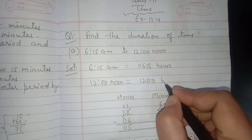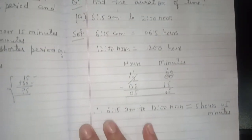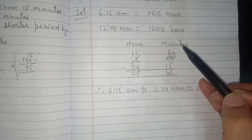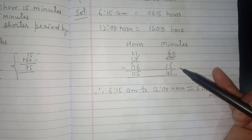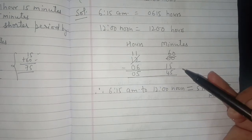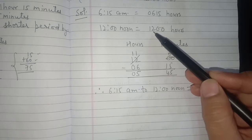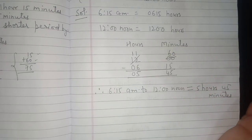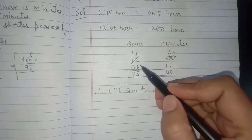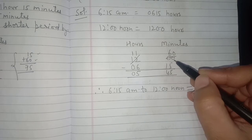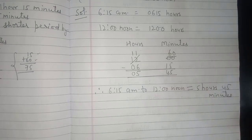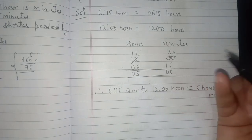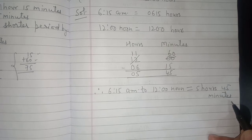12 noon is written as 1200 hours. Now we subtract: write 1200 on top and 0615 at the bottom. We cannot subtract 15 minutes from 00 minutes, so we borrow — 12 hours becomes 11 hours and 00 minutes becomes 60 minutes. 60 minus 15 is 45, and 11 minus 6 is 5. The duration is 5 hours and 45 minutes.